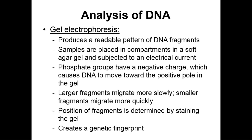We then take the gel that the DNA has been moving through and stain it — expose it to a chemical that makes the DNA fragments visible. A very common stain that's kind of falling out of favor was ethidium bromide. SYBR Safe is now slightly more popular; it's not quite as carcinogenic as ethidium bromide. At the very end of this process, we can look at all the bands and lines, determine the sizes of the DNA molecules, and come up with a genetic fingerprint.